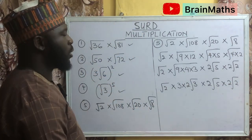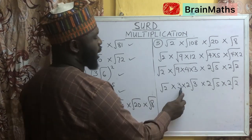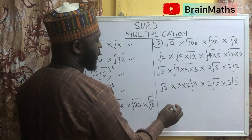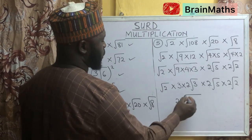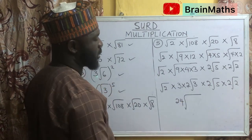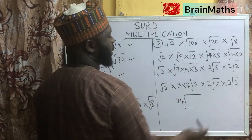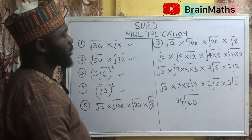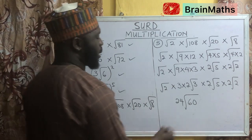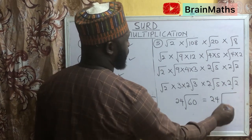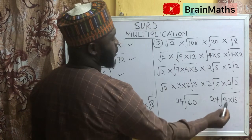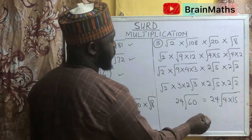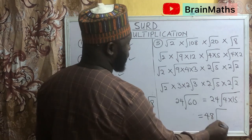We can now multiply all the figures and all the roots. We have 3 times 2 equals 6, 6 times 2 equals 12, and 12 times 2 equals 24. So we have 24, root 2 times 3 equals root 6, 6 times 5 equals 30, and 30 times 2 equals 60. So we need to look at 60 and see if there is any perfect square root — and that is 24 root 4 times 15. The square root of 4 is 2, and if you multiply 2 by 24, the final answer is 48 root 15.